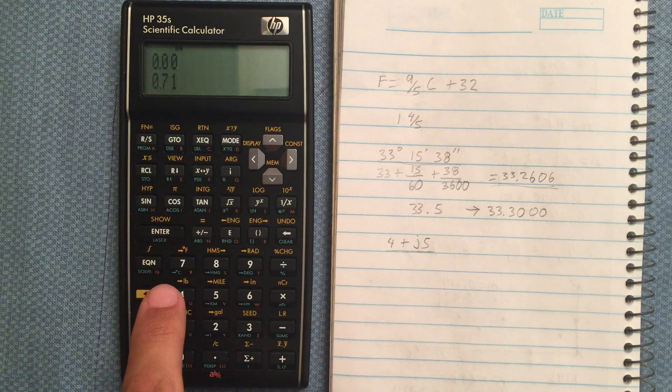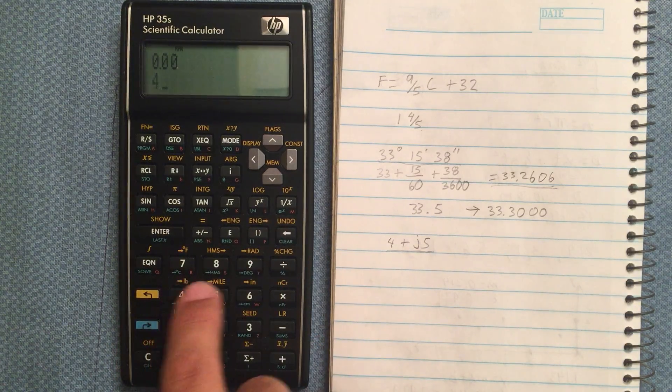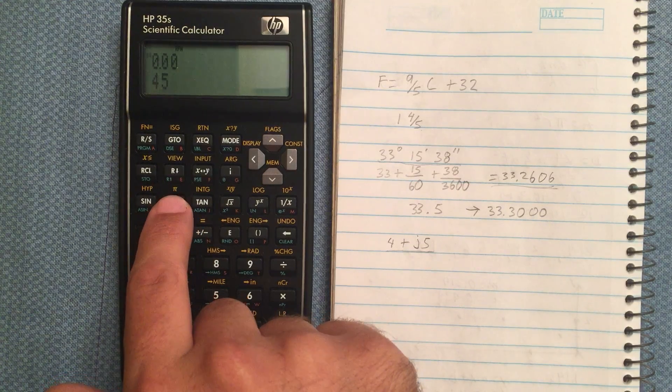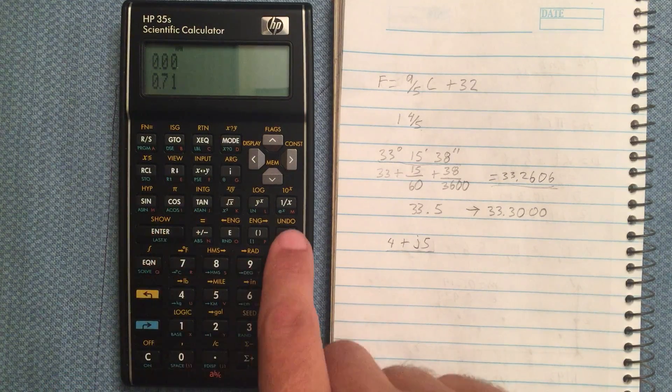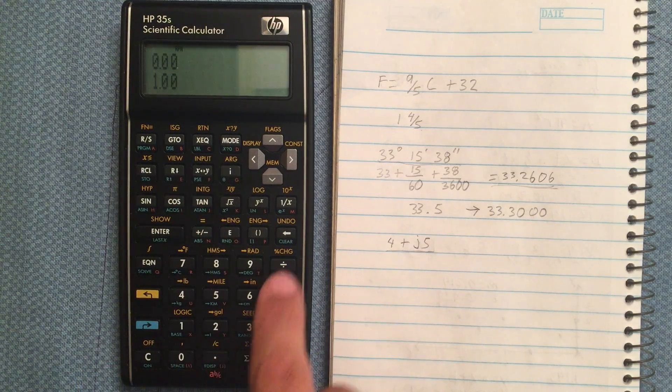The sine of that is 0.71. The cosine of 45 should also be 0.71. And the tangent is 1.